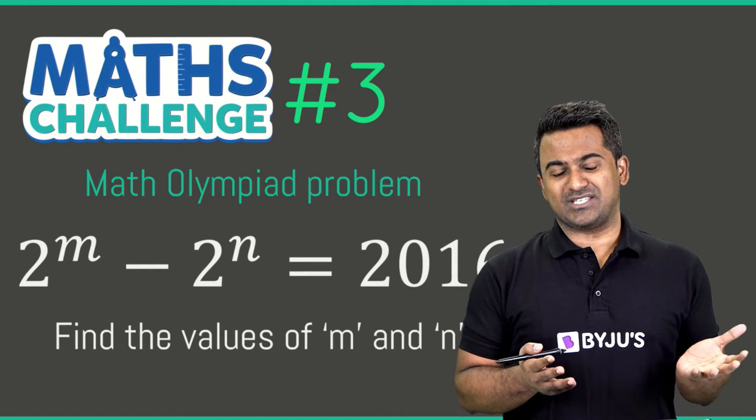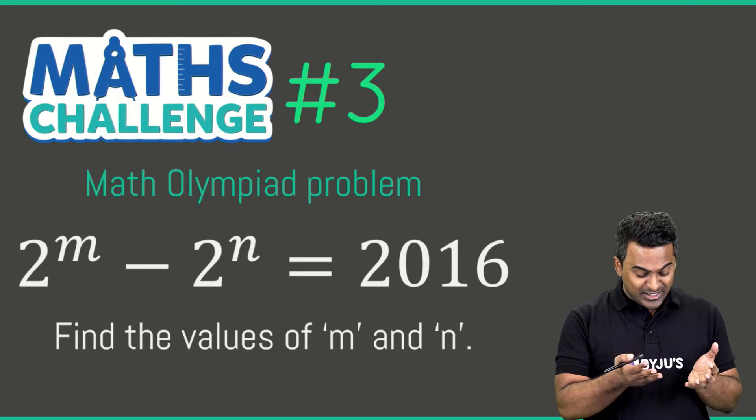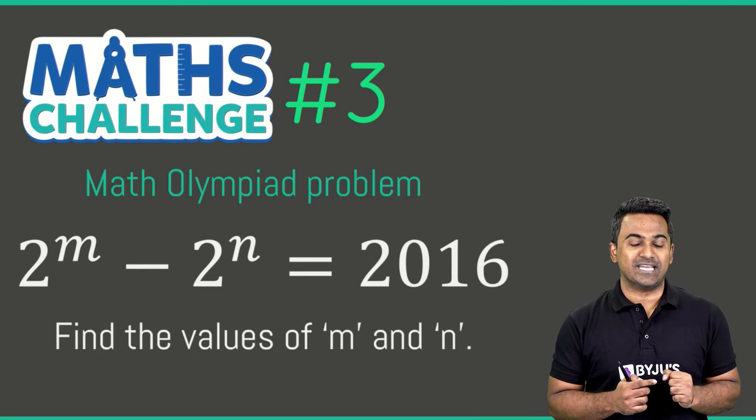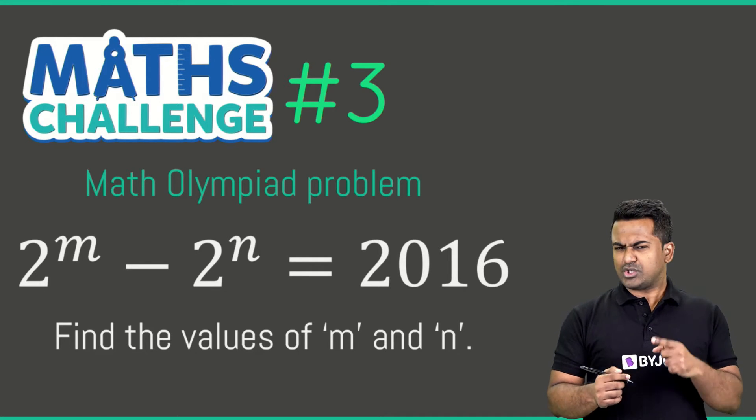Now when you look at this equation it looks fairly simple, right? I mean all you're given is 2 to the power m minus 2 to the power n equals 2016, and you've been asked to figure out the values of m and n.